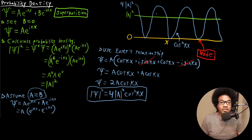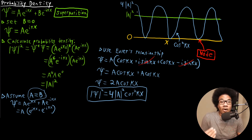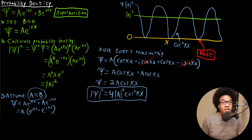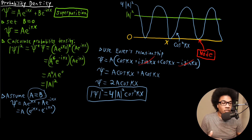So to summarize, unlike the wave function — which can have positive and negative values — the probability density is always positive since it is squared. It oscillates back and forth between different probability values, in this case from 0 to a maximum of 4A squared. These cosine-type functions are really useful for expressing probability densities because they oscillate and satisfy the relevant equations.